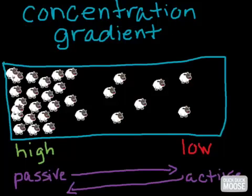So this is a quick drawing of a concentration gradient where here the little sheep are very concentrated on one side, high concentration, and not very concentrated on the other, low concentration.